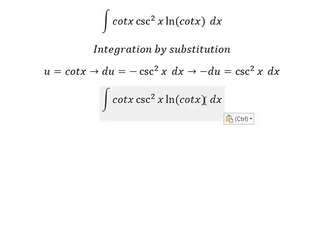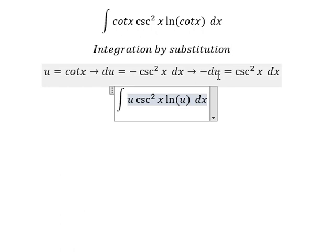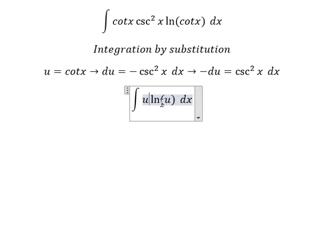So cot x we change to u, csc²x dx we change to -du, giving us the integral of -u ln(u) du.